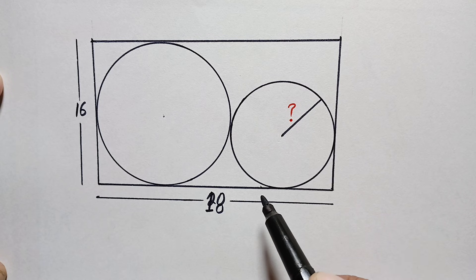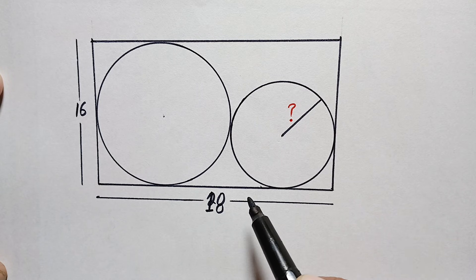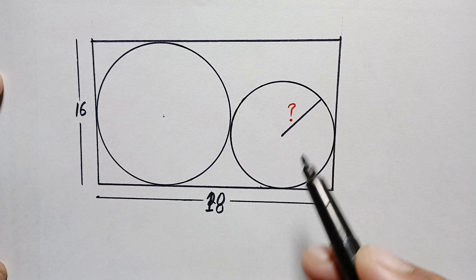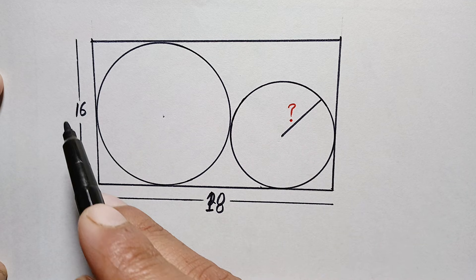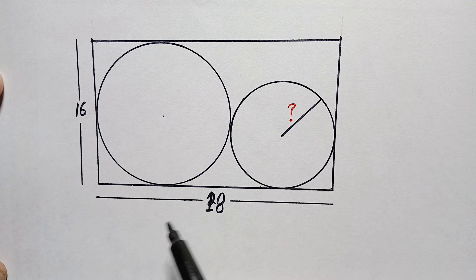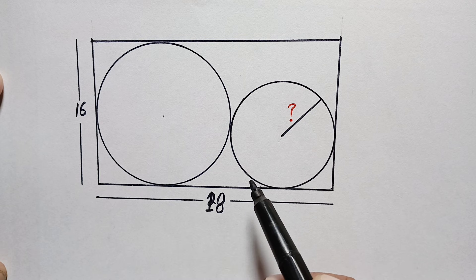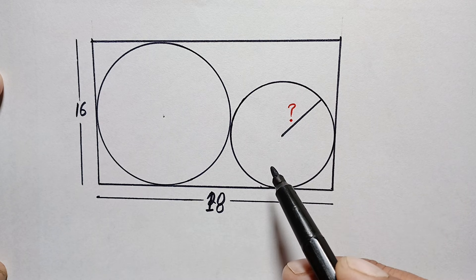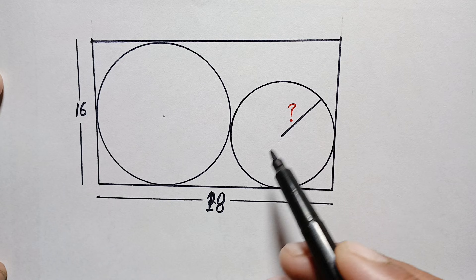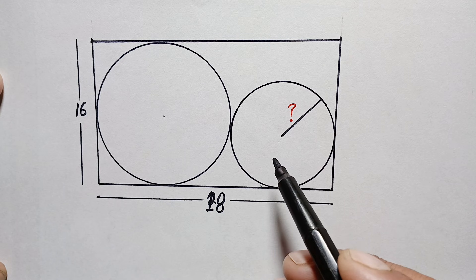Hello everyone, you are welcome. Today we have a very interesting geometry math problem. We are given a rectangle with two sides of length 16 and 18, and there are two circles inside the rectangle. Our target is to find out the radius of the smaller circle.